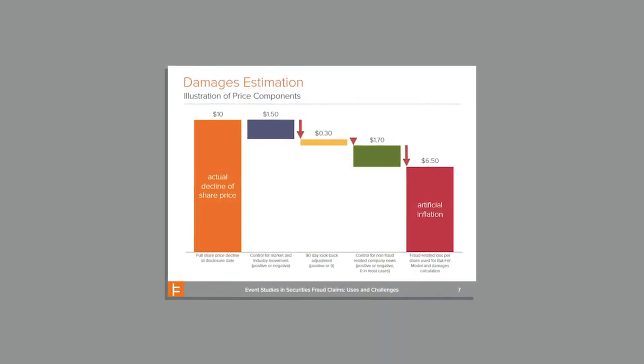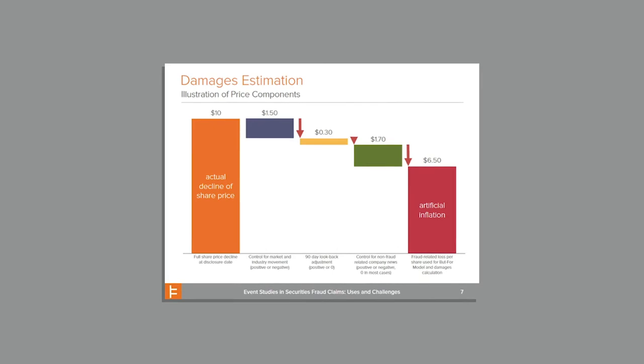There can be a number of difficulties in going through with the damage estimation methodology. One problem in particular is that the same day the disclosure of the crucial information happened and caused the stock price to drop might also have been a day on which there were other dramatic or important pieces of market information that had an effect on the stock price. Those have to be separated out from the drop in order to determine how much of the drop is actually quantum related to the disclosure that is the subject of the securities claim.